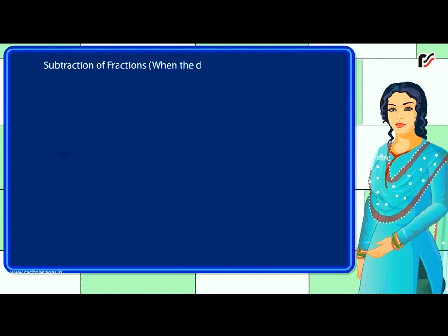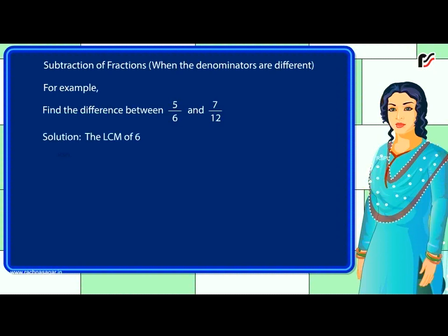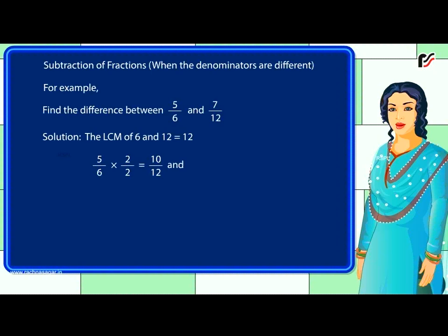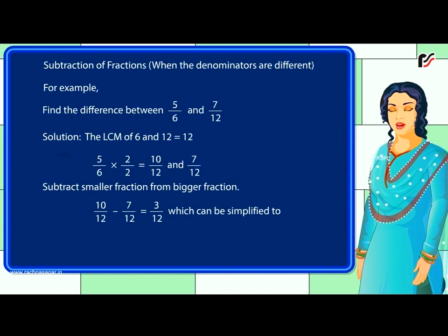Subtraction of fractions when the denominators are different. For example, find the difference between 5 by 6 and 7 by 12. Solution: the LCM of 6 and 12 is 12. So 5 by 6 becomes 10 by 12. Subtract the smaller fraction from the bigger: 10 by 12 minus 7 by 12 equals 3 by 12, which simplifies to 1 by 4.